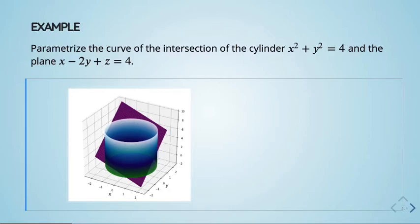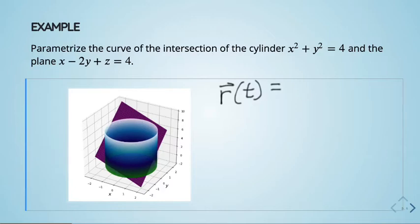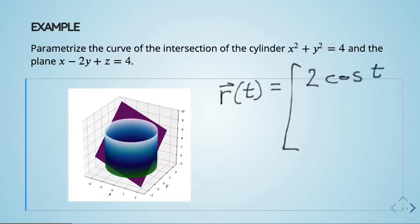How do you do this problem? Parametrize means the output should be of the form r(t). Since my curve has to be on the cylinder — a circle of radius 2 — I know how to parametrize that; circles are things we should do instinctively. So x = 2cos(t) — the 2 is the amplitude, meaning radius 2 — and y = 2sin(t).